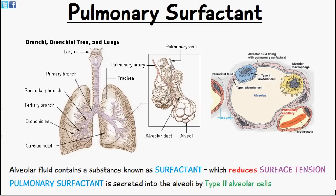Welcome to 5-Minute School. Today's video we're going to be talking about pulmonary surfactant. In the last video we mentioned the effects of surface tension on the alveoli of the lungs — how an increased amount of surface tension can result in collapse of the alveoli. We're going to mention the mechanisms in place which prevent the collapse of the alveoli, and it's due to something known as pulmonary surfactant.